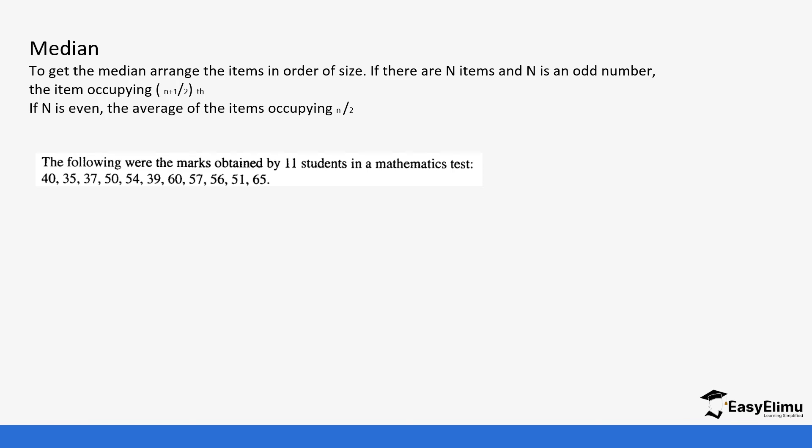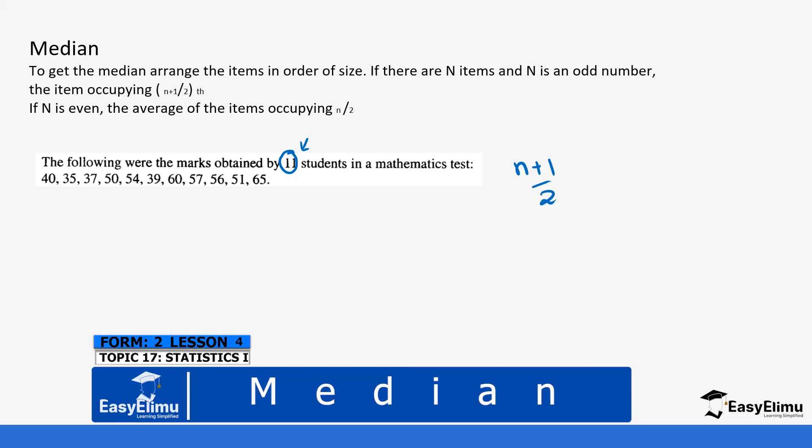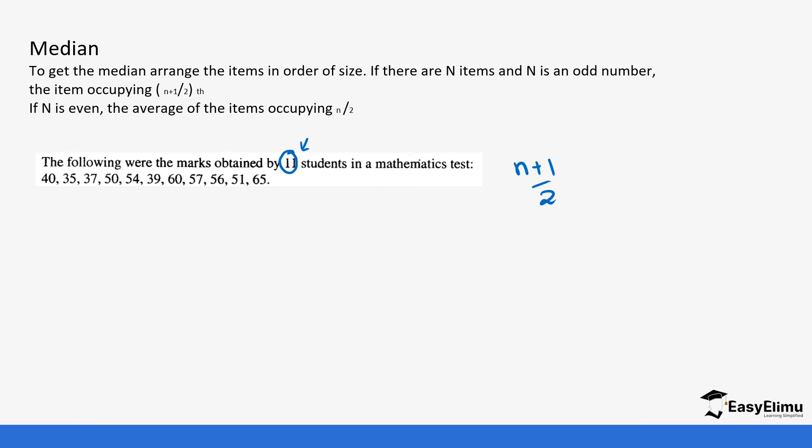Let's look at an example. The following were the marks obtained by 11 students in a mathematics test. When you look at the number of students, this is an odd value. So the formula is going to be (n+1)/2 and you get the position of the specific number or mark that is at the center. It's going to be (11+1)/2 which is 12/2, so we have to look at the sixth position.